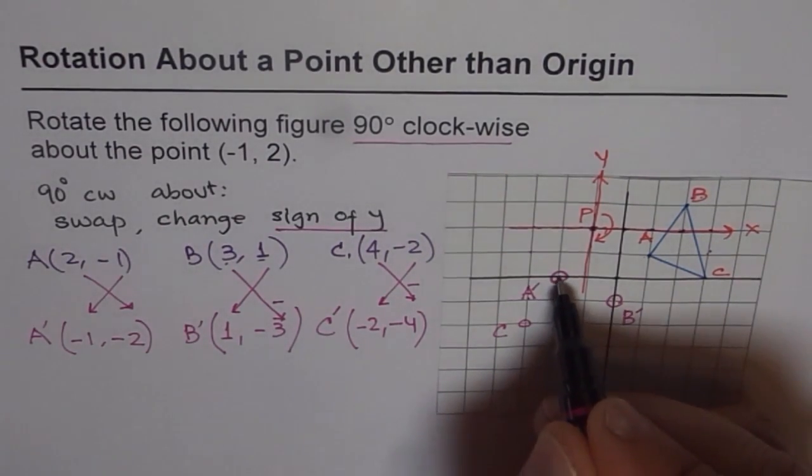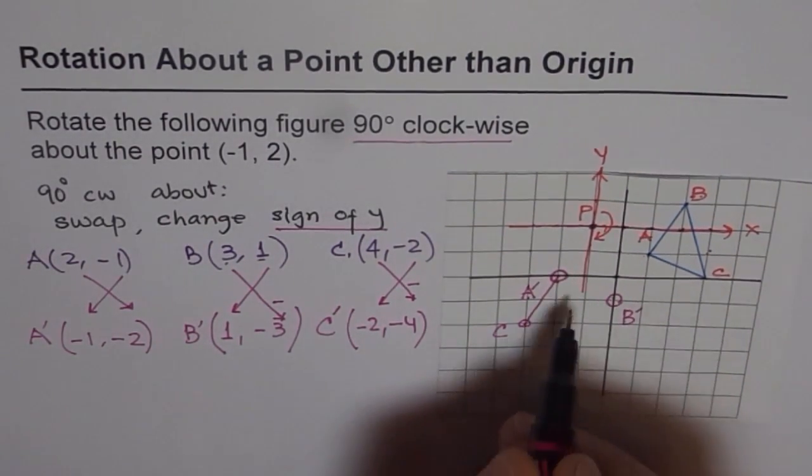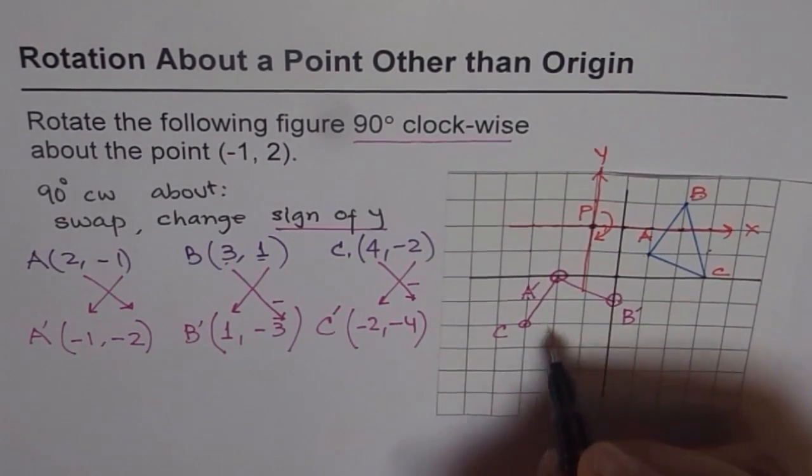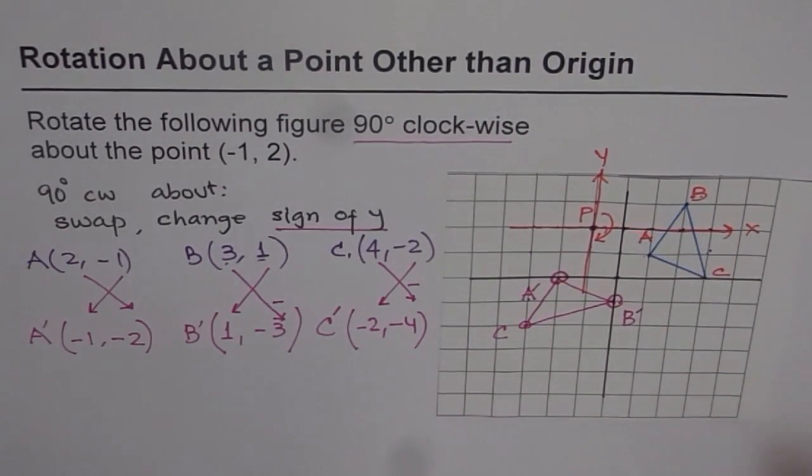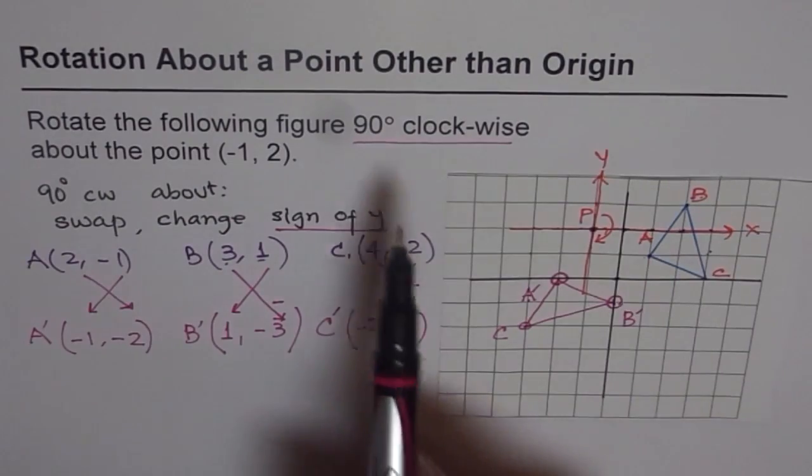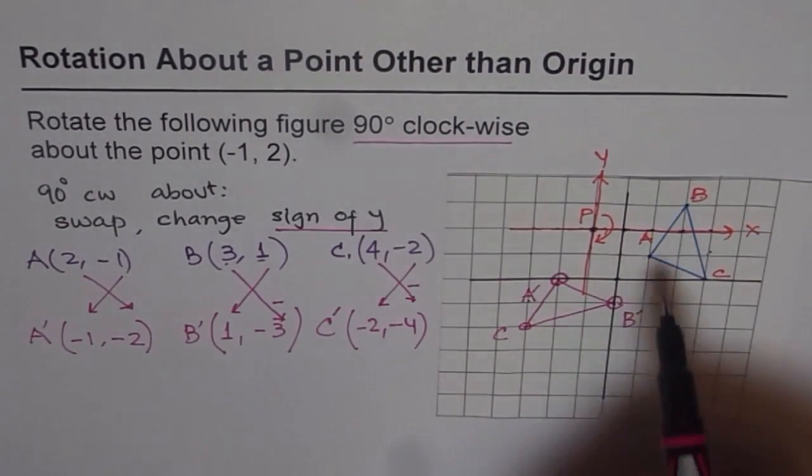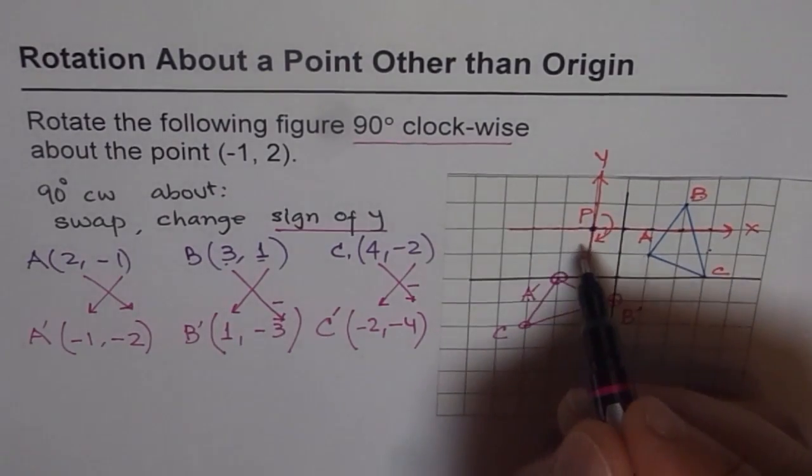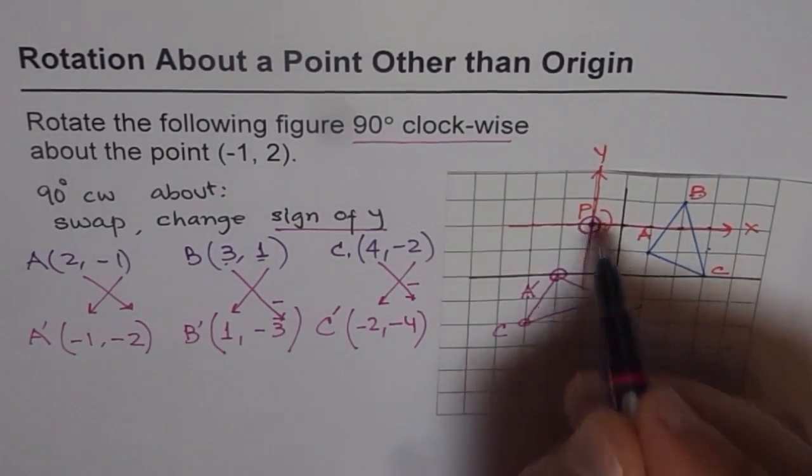Now we can join these points. And we get the result, which is, we have rotated our figure 90 degrees clockwise. Do you see that? About the point P.